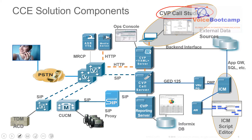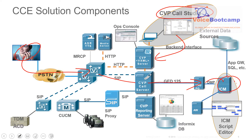As the customer call comes in within your CVP server, your ICM will then communicate with various components within your organization. At some point it will go to the CVP call server, that call will then go to PG, PG sends the call to ICM, and the ICM script gets executed.